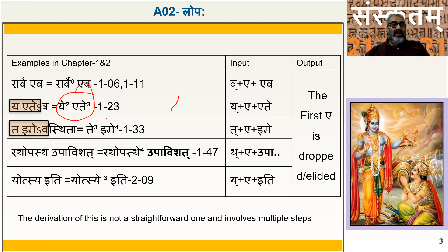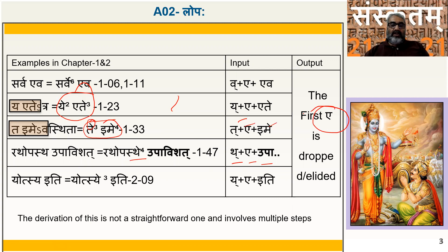Then we have 'Te Te Atra Ime Avastitah,' which is actually 'Te Atra Ime Avastitah' — this Ekar Lopam has happened. So if you look at Te plus A plus Ime. Similarly, 'Rathopastha Uphavishadha' — Te plus A plus Uphavishadha — there is an Ekar Lopam here.